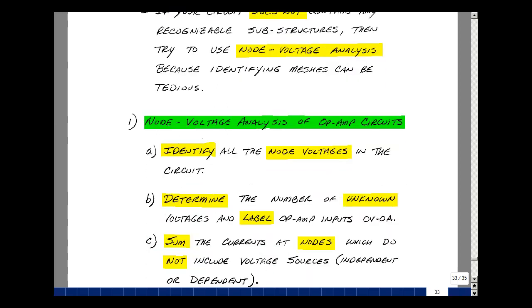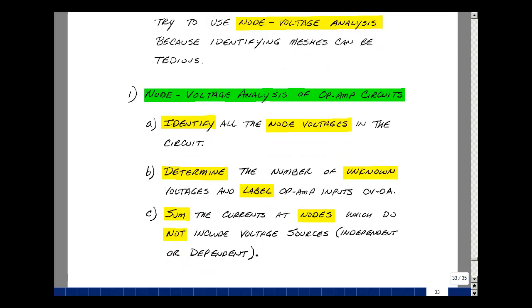First thing I do is identify all the nodes in your circuit. Determine how many of those are unknown, given the fact that you can label the node voltage, node current, and you also have unknown input. We need to sum the currents at nodes in our circuit so that we can get constraints on our node voltages. We don't want to write Kirchhoff's current law at a node that has a voltage source, independent or dependent, so that's going to give us another unknown. Let's try this on an example.